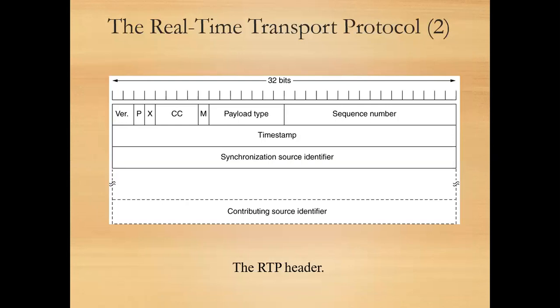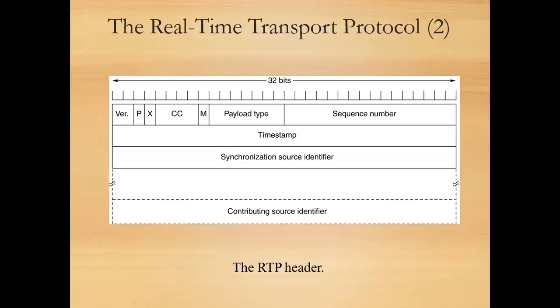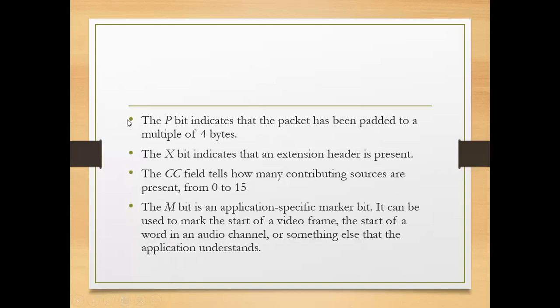RTP, the Real-Time Transport Protocol, has a 32-bit header with different fields. The first field is Version, which shows which version of RTP is being used.